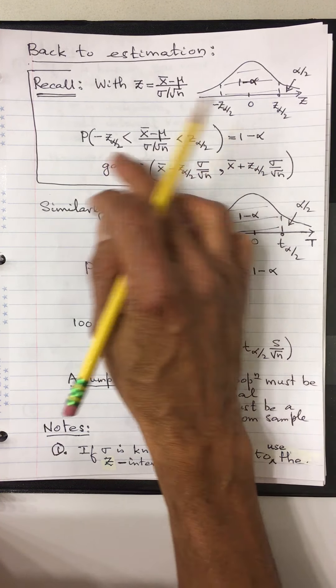Now, when σ is unknown, the minute you replace σ by s, this is going to follow a t-distribution. So we are going to do the same thing. Here t_{α/2} is just like the z-curve — the same idea — the only difference is that instead of σ I have s.